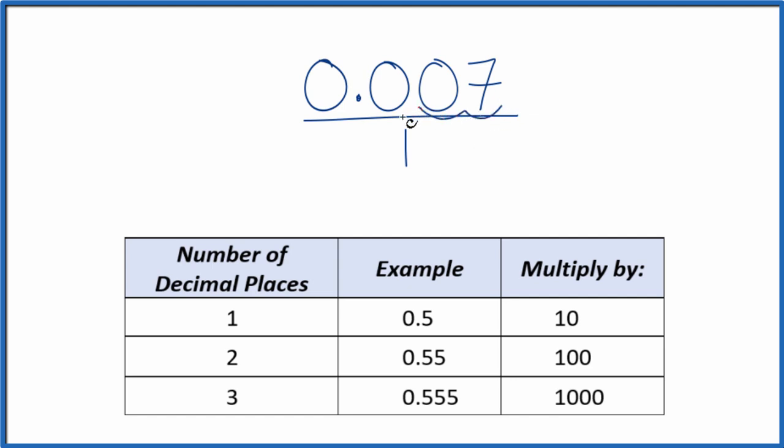I can see we have 1, 2, 3 decimal places. Three decimal places, we're going to multiply by 1,000, and that'll give us a whole number.